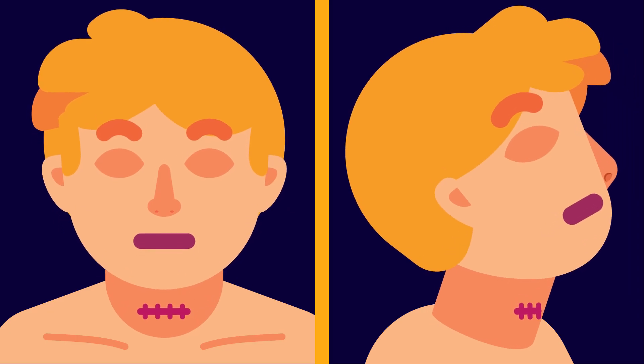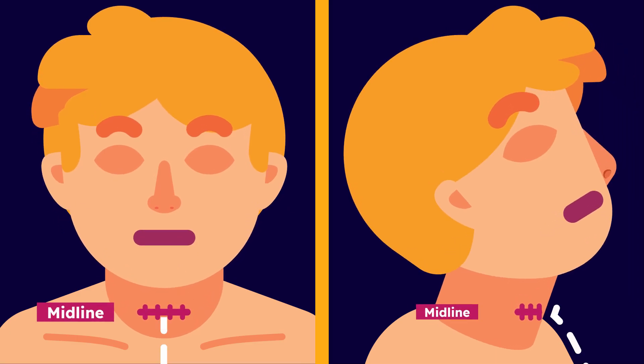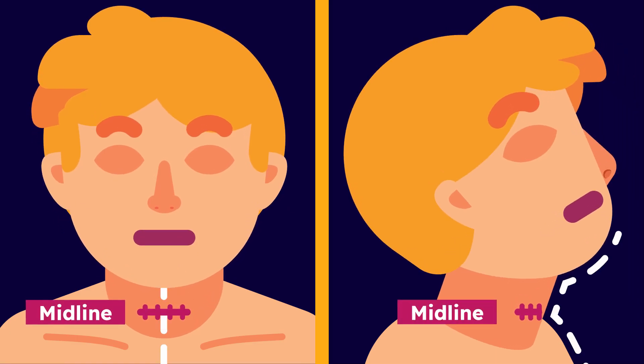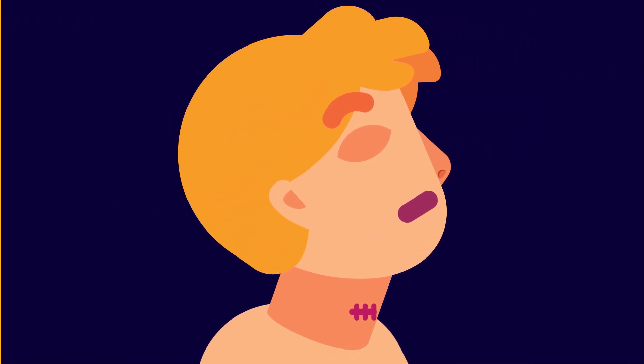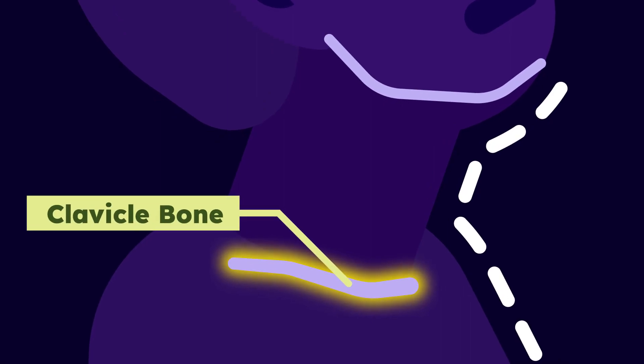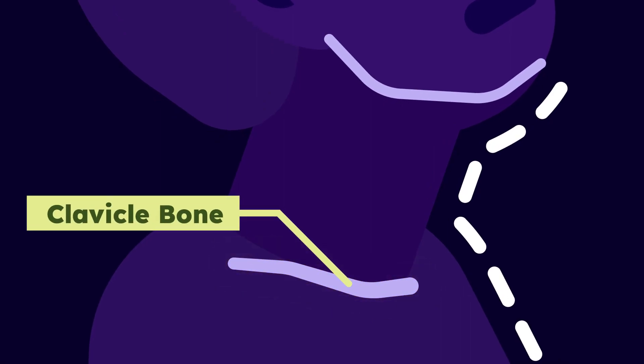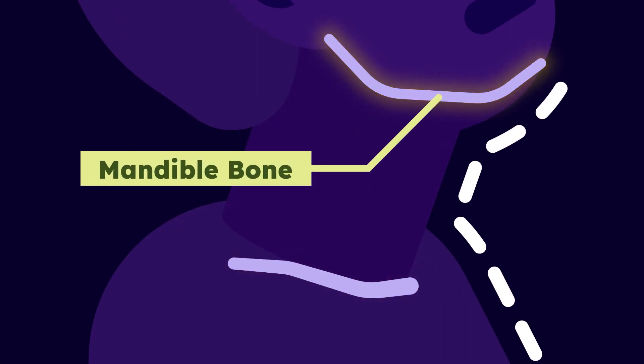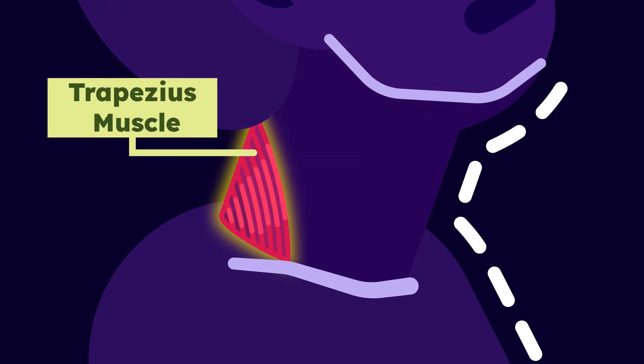First, as the baseline, determine the middle line of your neck. Then, locate the clavicle for the limit of the lower part. Next, locate the mandible bone above. Finally, locate the trapezius muscle behind. This is the area we will focus on.